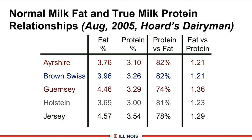We talked about the ratio of milk fat to true protein. Based on the most recent issue of Hoard's Dairyman, the typical Holstein values are 3.69 percent milk fat and 3.0 percent true protein. Dividing protein by fat gives a ratio of 81 percent, or dividing fat by protein gives 1.23. If your milk protein is high or low, first look at its relationship to the fat level, because that may indicate another nutritional factor or rumen condition occurring in the herd.